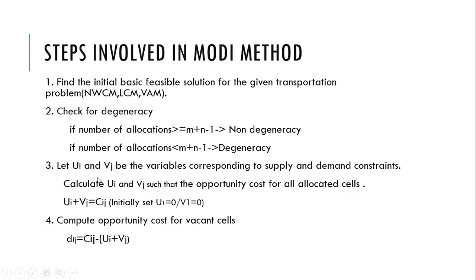And here we use two variables that is ui and vj. Let these variables correspond to the supply constraints and demand constraints. And for all allocated cells we have to see that all allocated cells have to satisfy this condition that is ui plus vj is equal to cij. So here what we do, we initially depending upon the problem, we initially set u1 is equal to 0 or v1 is equal to 0.